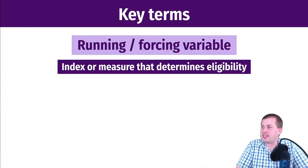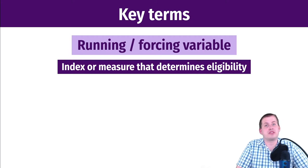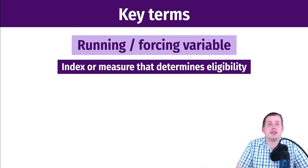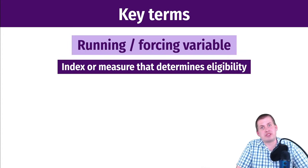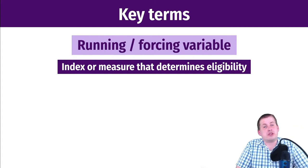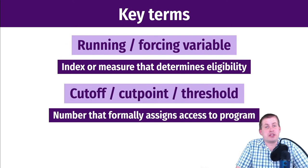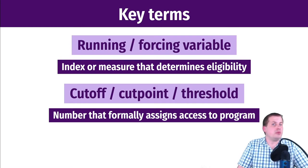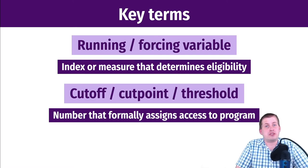The main intuition behind regression discontinuity is that there is a rule, people follow it, and we can rely on it to determine treatment and control groups. Two key vocabulary terms: the running variable, sometimes called a forcing variable, is the thing that determines eligibility — income, household size, test scores, or GPA. Along that running variable you have a cut point or threshold, which is the number that formally assigns access. For example, if a program requires a 3.0 GPA, that's your cut point — a 3.1 qualifies, a 2.9 does not.